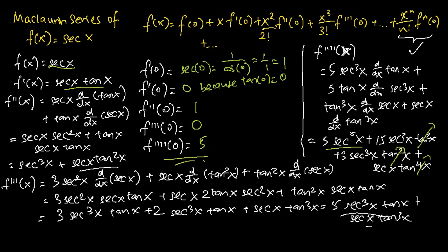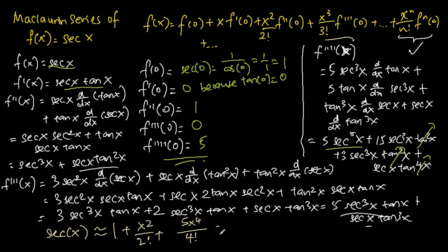Now we can form the Maclaurin series of secant x. f(0) is 1; f'(0) is 0 so we skip that term; f''(0) is 1, so we have x squared over 2 factorial; f'''(0) is 0 so we skip that term; f''''(0) is 5, so we have 5x to the power of 4 over 4 factorial. So the Maclaurin series of secant x is approximately 1 plus x squared over 2 plus 5 over 24 times x to the power of 4, evaluated up to the x to the power of 4 term.